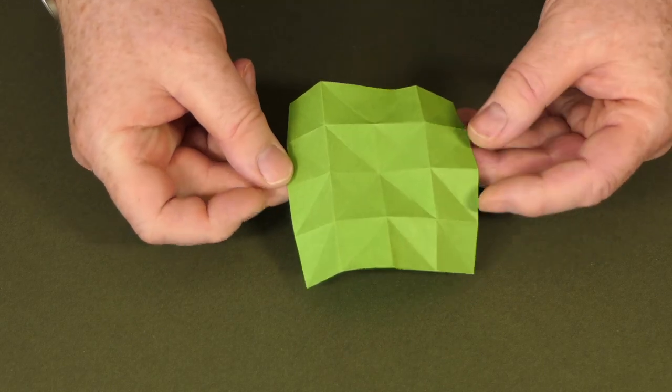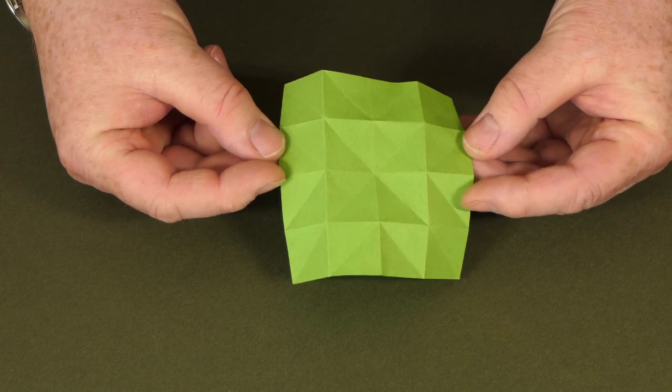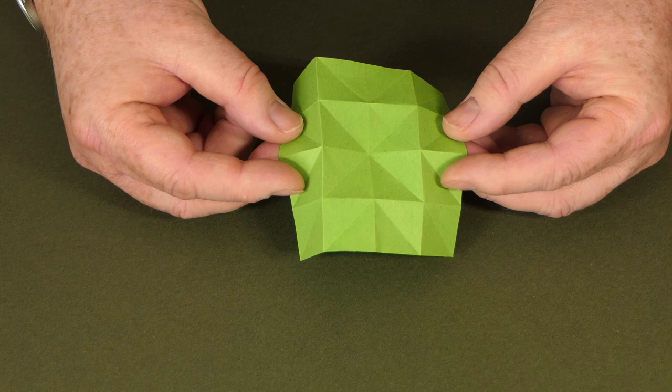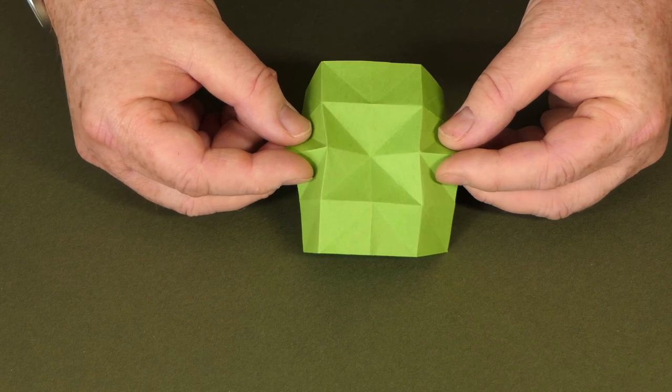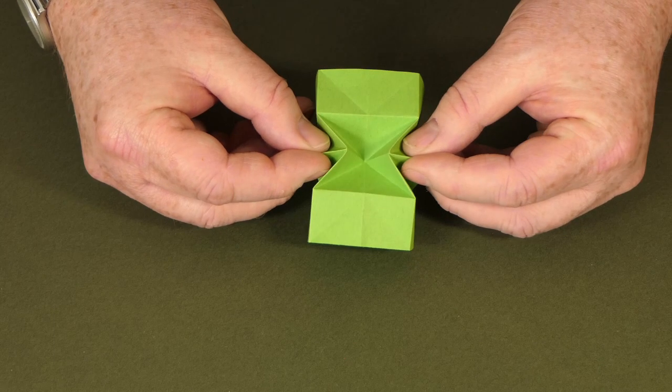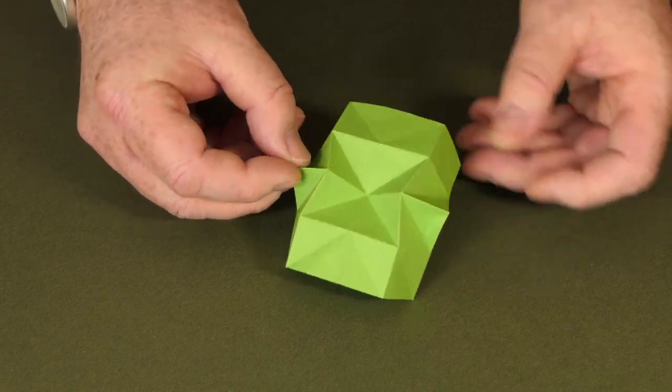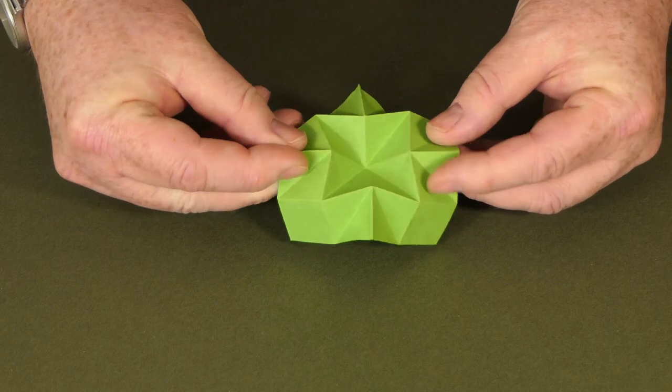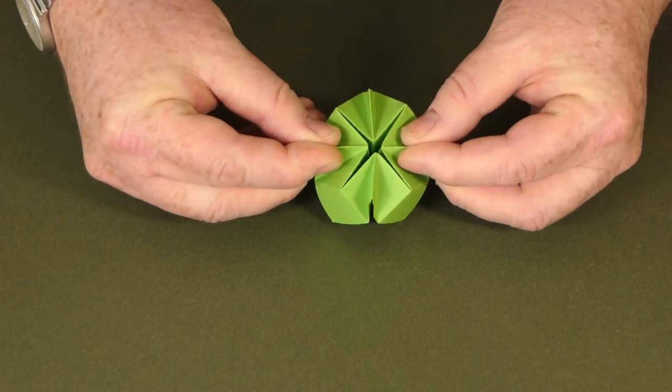Once we've done that we can take these two edges to the side - there's a mountain crease on each of them. And I'm just going to put that crease in place and push the edges to the center a little, you can see it starts to come together. And if I rotate the model 90 degrees to do the same on these two edges, it should push all the way together like this.